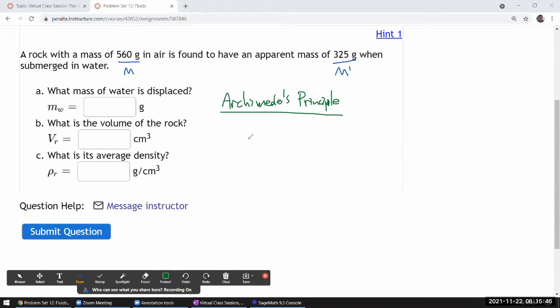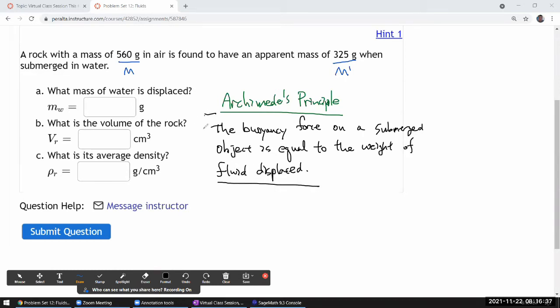Archimedes' principle says that the buoyancy force on a submerged object is equal to the weight of fluid displaced. And the reason I want to use this principle is because it gives us the answer to the first question just directly.